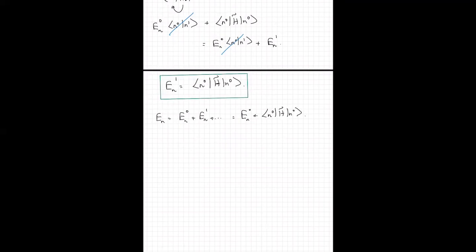The perturbation is actually an operator, so it doesn't make sense to say an operator is small. What we can actually make a statement about is the matrix elements of the operator. When I say it's a perturbation, I actually mean that the matrix elements of the perturbation part of the Hamiltonian between the unperturbed eigenkets — this number in the second term — is actually small compared to the unperturbed part EN0. As long as this condition is satisfied, it makes sense to use this expression.